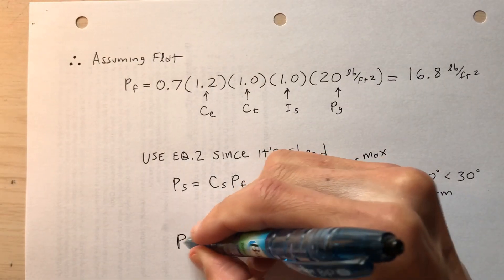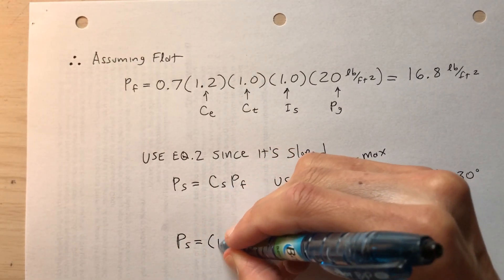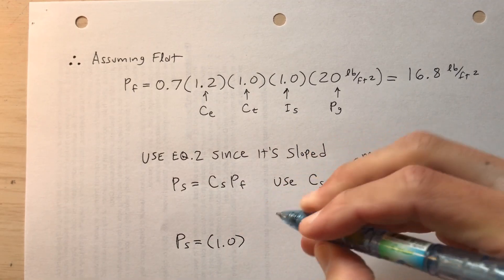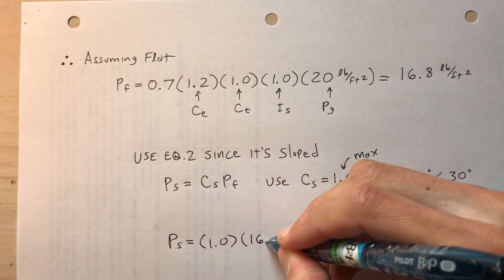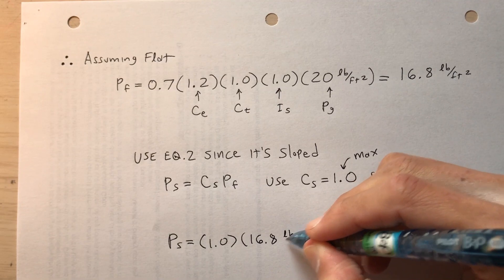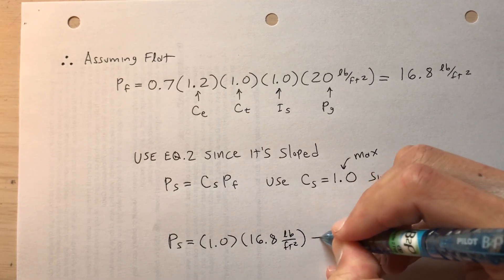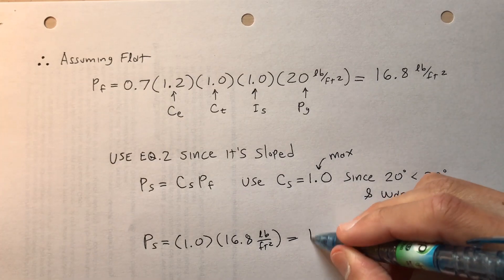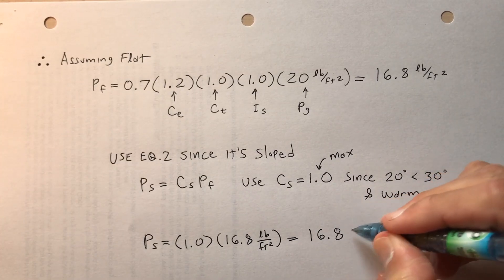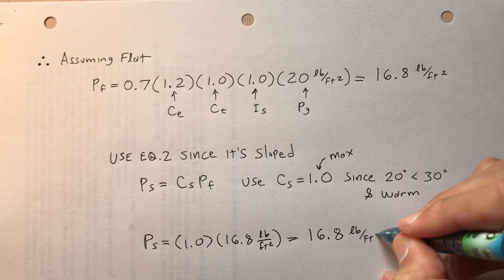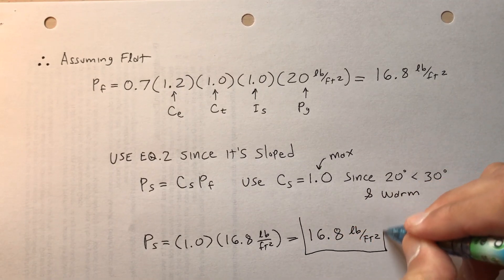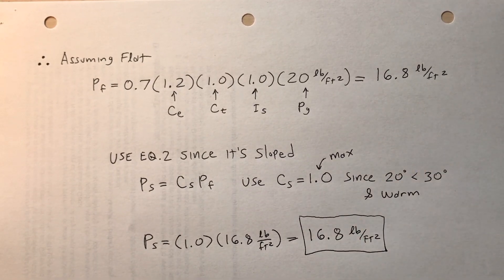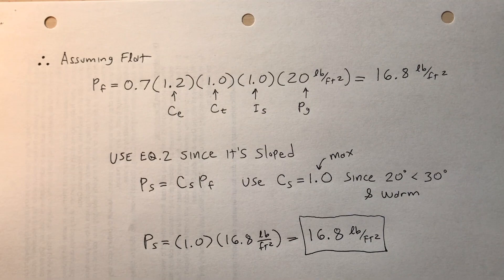Okay, so p_s is equal to 1.0 times 16.8. So what I'm getting is my snow load, 16.8 pounds per square foot. So that's what I had better design for.